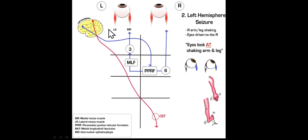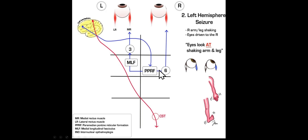What happens if we have a seizure that originates from the left hemisphere? A seizure is the opposite of a stroke — now we have excessive electrical activity; we drive pathways rather than destroy them. If we activate the precentral gyrus in the left hemisphere during a seizure, the right arm and leg will shake. If we activate the left frontal eye fields, we stimulate the pathway that activates the opposite PPRF sixth-nerve complex, and the eyes will get driven to the right. So in a seizure, the eyes will look at the shaking arm and leg, and that tells you which hemisphere of the brain is active in the seizure activity.